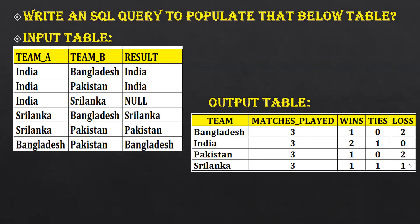This is the output which they are expecting. First, they want the team names, how many matches each team has played, how many wins happened, how many ties there are, and how many losses there are. Now, how can we approach this solution? How can we write this particular query?